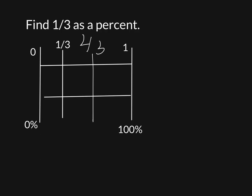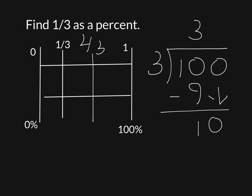So what I need to do is I need to take three and divide it into one-hundred. Let me see, that's three, there's a nine, subtract, get a one, bring down the zero, so that goes in three times, multiply and subtract, we get a one.